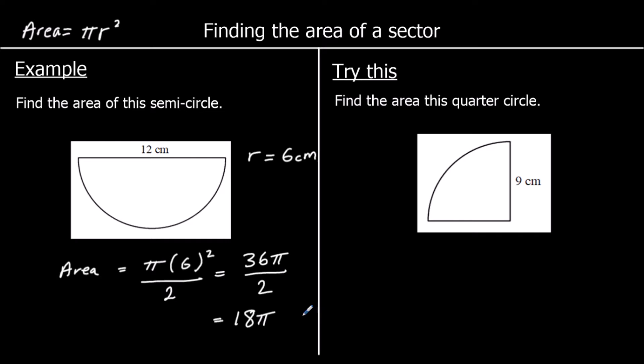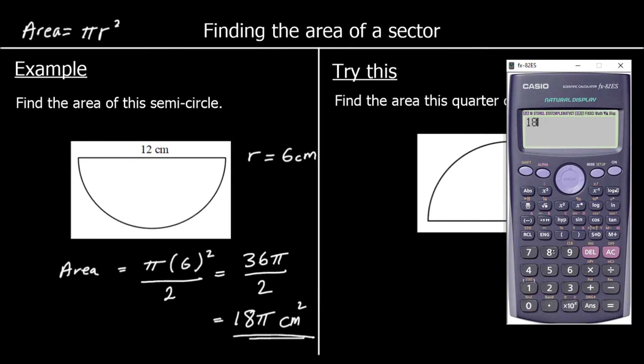The area of the semicircle is 18 pi. We measure area in squares, so the units are centimeters squared. If we were asked to give our answer as a decimal, we could type it into the calculator — 18 pi — press the S to D button and we will get a decimal answer instead.